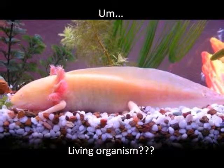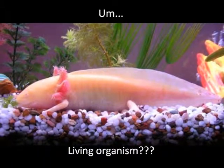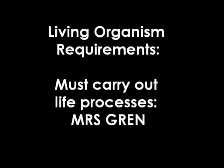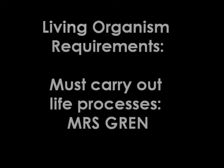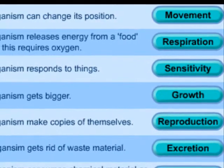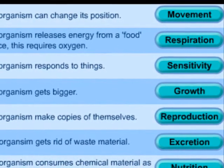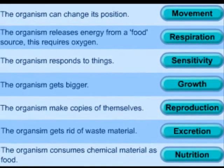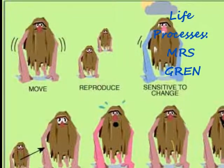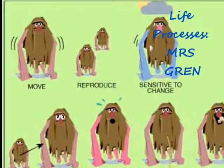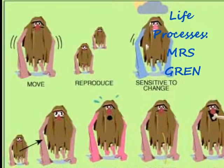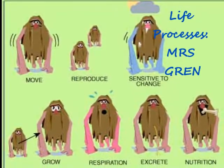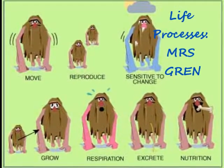You may be wondering, how do you know if something is a living organism? Well, in order to be classified as a living organism, the organism must carry out all of the life processes. The life processes can easily be remembered through the acronym MRS GREN: M for movement, R for reproduction, S for sensitivity, G for growth, R for respiration, E for excretion, and N for nutrition.